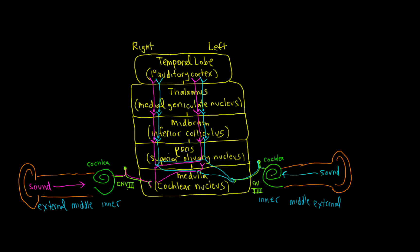We have the inferior colliculi in the midbrain, and then we go on to the thalamus, where we have the medial geniculate nucleus. Finally, the temporal lobe—the primary auditory cortex.